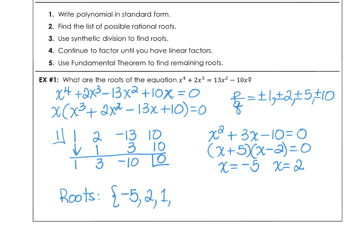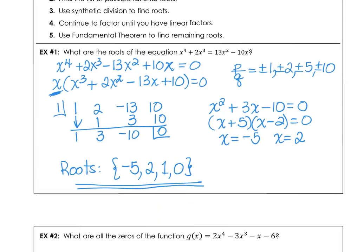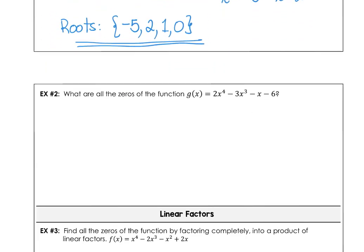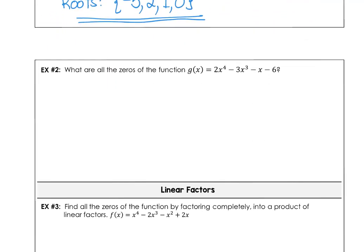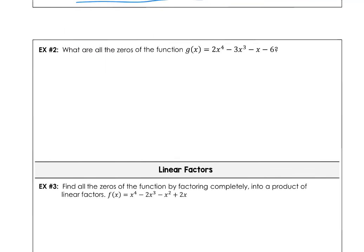So the roots of the equation are negative 5, positive 2, positive 1, and 0. It's a fourth-degree polynomial and we found four real zeros.